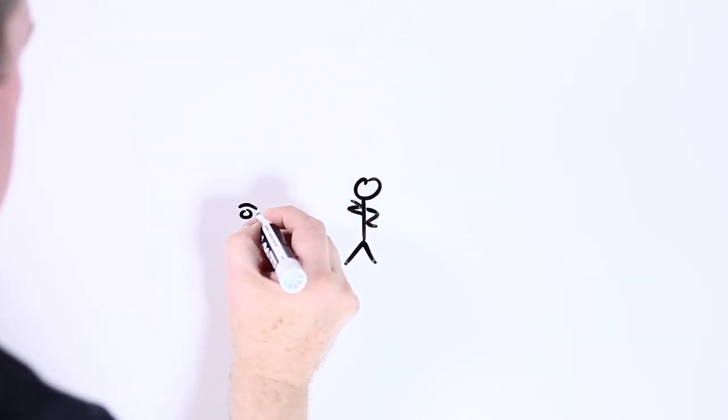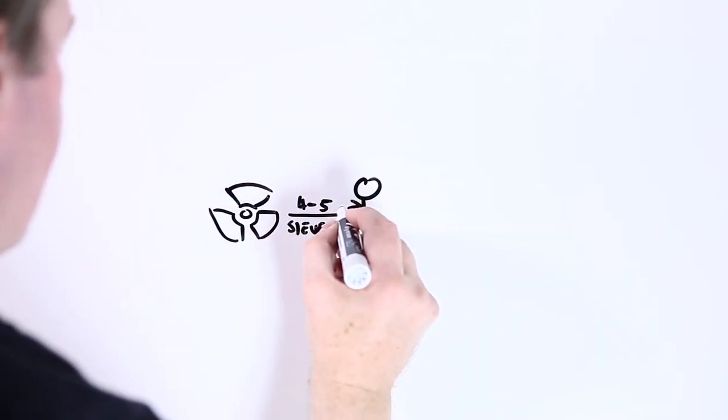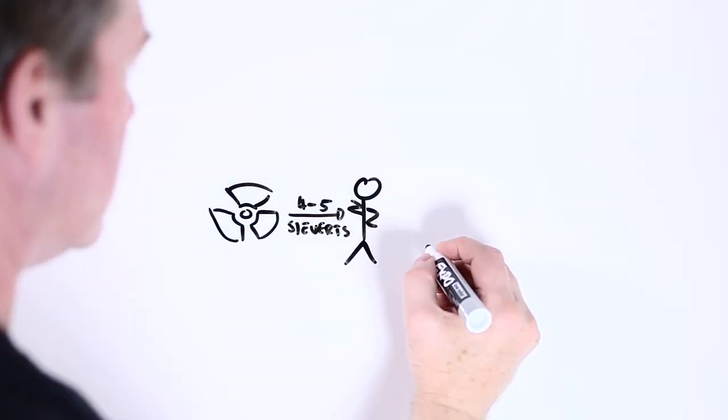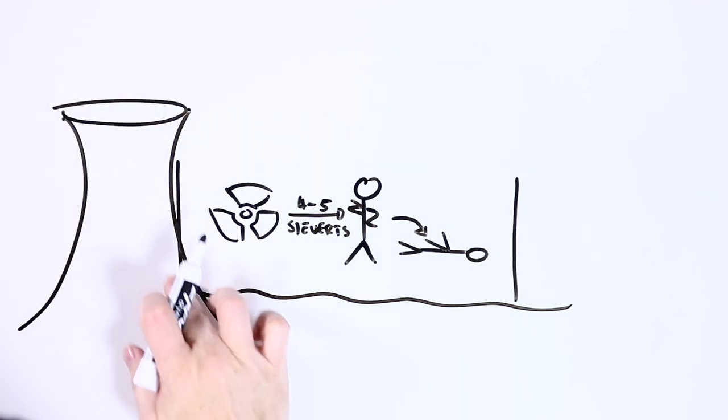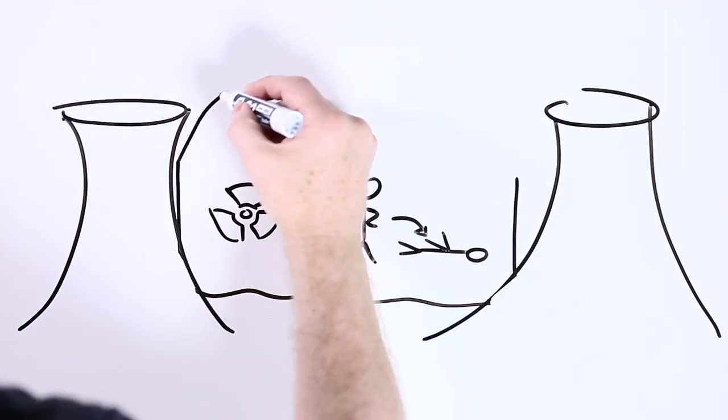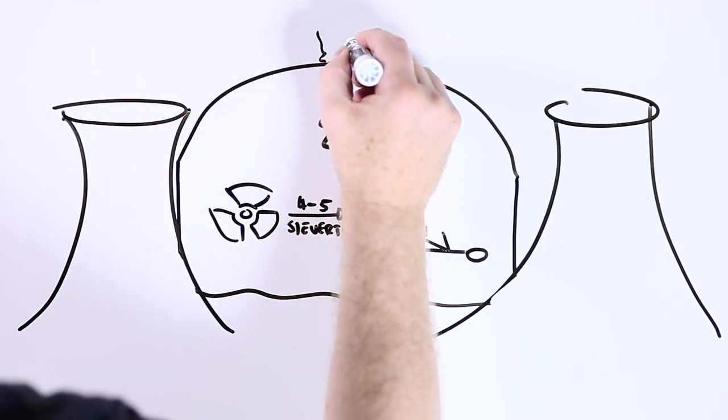For example, if you're exposed to four or five sieverts over a short period of time, it might well kill you. And one sievert, if delivered all at once, will make you pretty sick. But you need to be in some pretty extreme situations to get exposures like these, like being inside a nuclear reactor when there's a major leak.